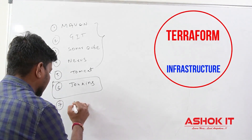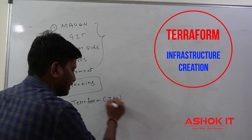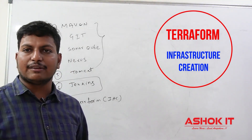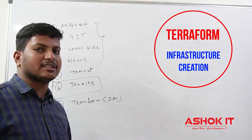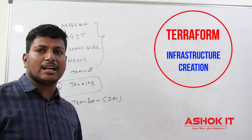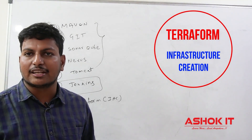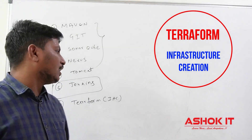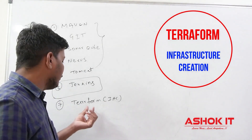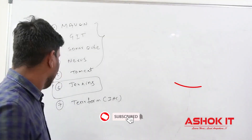The next one we are going to use is Terraform. Terraform is called as infrastructure as code. Whatever infrastructure we need for our project — the machines that are required, the storage services that are required, or the databases that are required — instead of creating that infrastructure manually, we can automate the infrastructure creation by using Terraform. Terraform supports almost all the cloud platforms available in the market.